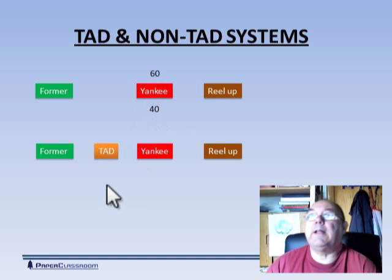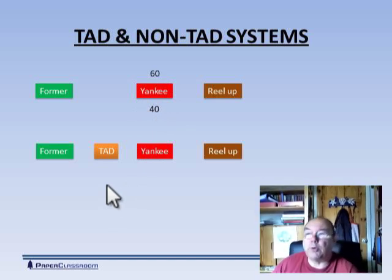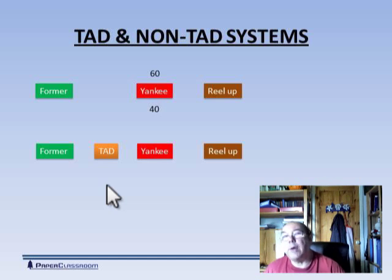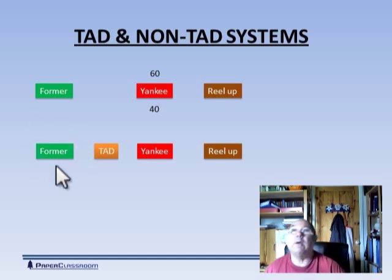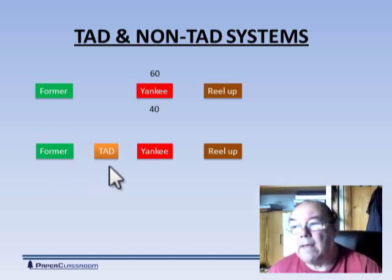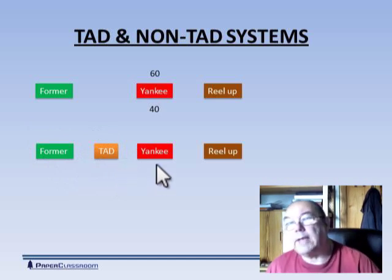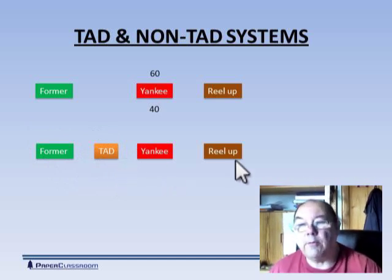The latest development in tissue production is the TAD system, and TAD stands for through air dryer, and we'll see a little more about that in a moment. So the new system is we have the former, whatever it happens to be, it then goes through the TAD system, then onto Yankee for final drying, and then reel up again.